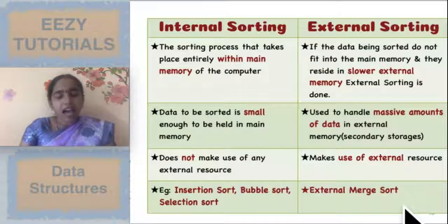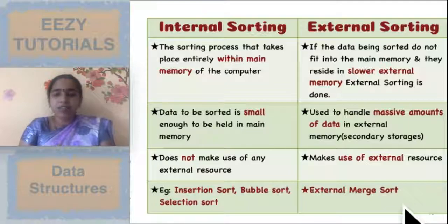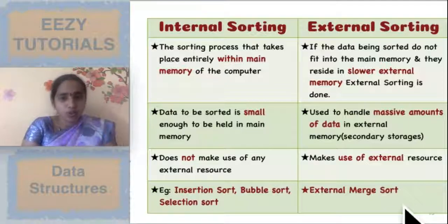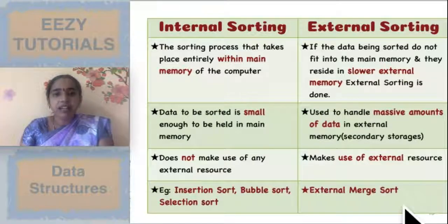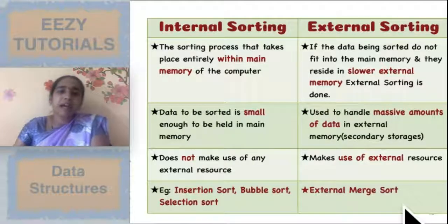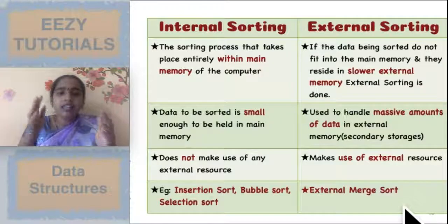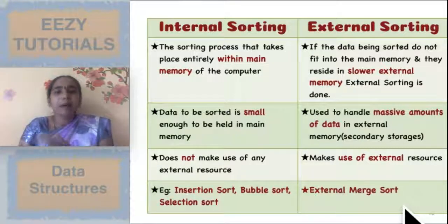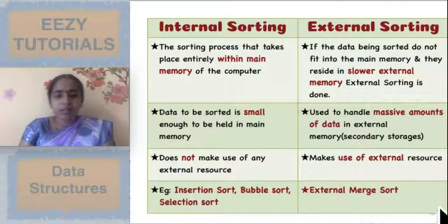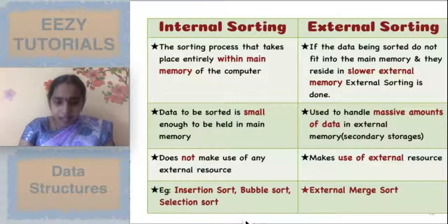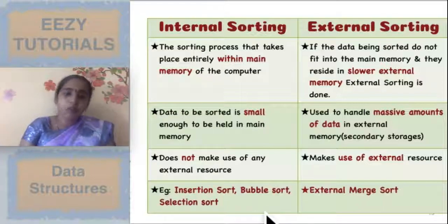For example, suppose you have very large data: a few numbers stored in magnetic tape one, a few other numbers in magnetic tape two, and a few more in magnetic tape three. All the data from tape one, tape two, and tape three should be clubbed and merged — for that you use external merge sort. We will be seeing how this works, along with all these sorting algorithms, in forthcoming lectures.